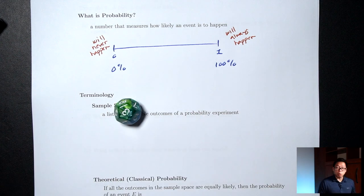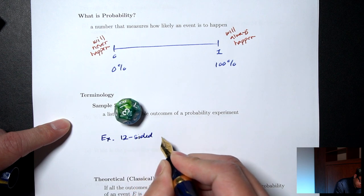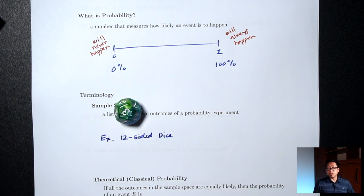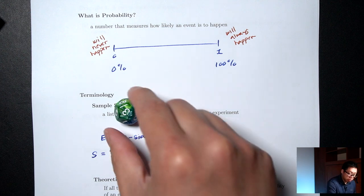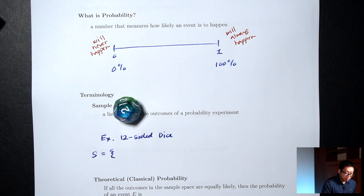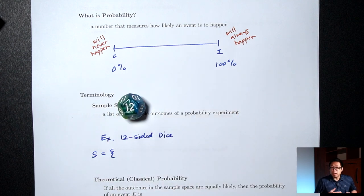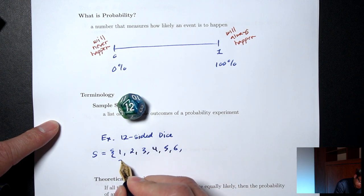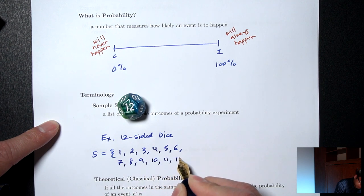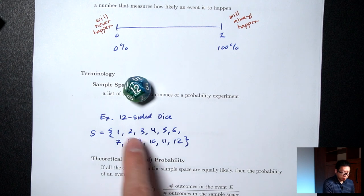For example, with this 12-sided die: when I roll it, I don't know for sure what's going to happen, but I can list everything that could happen — that's the sample space. S for sample space: I could get a 1, a 2, a 3, and all the way up to 12. So the sample space for this 12-sided die is 1, 2, 3, all the way up to 12.